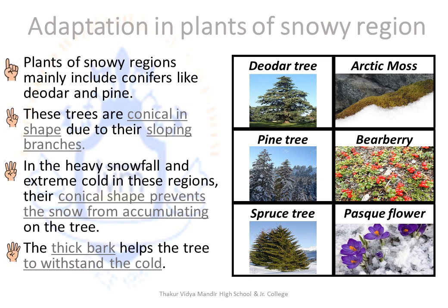Adaptations that take place in plants of snowy regions: Plants of snowy regions mainly include conifers like deodar, spruce and pine. These trees are conical in shape due to their sloping branches — when there is heavy snowfall, their conical shape prevents snow from accumulating; the snow simply slides off. The thick bark helps the trees withstand the cold. Trees in snowy regions are very tall as they try to reach sunlight, which is very limited there. In contrast, desert plants are shorter as ample sunlight is available in the desert.